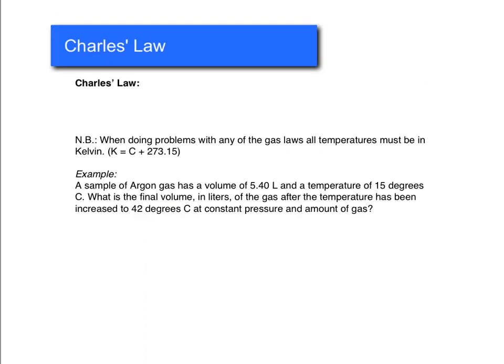Alright, now we're going to do Charles' law. So Charles' law is a relationship between volume and temperature, and they are directly proportional, which means that if one goes up, the other one also goes up. And the equation that goes with Charles' law is V1 over T1 is equal to V2 over T2. Alright, and just a reminder that any time you're doing gas law problems, the temperatures must be in Kelvin, and this is the conversion here.